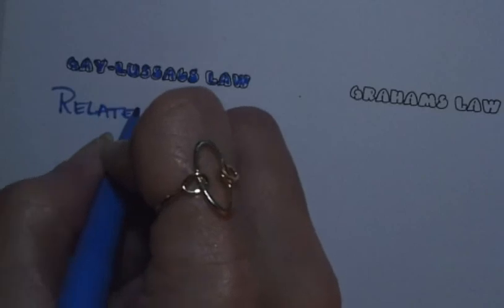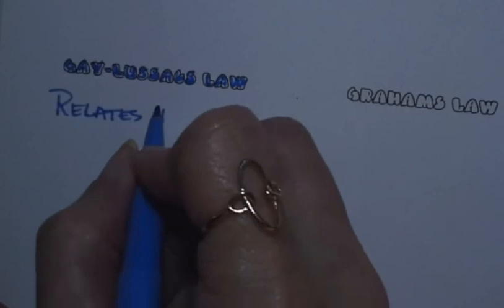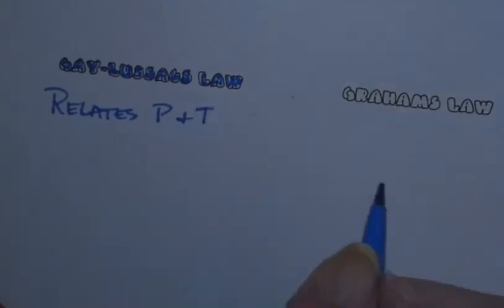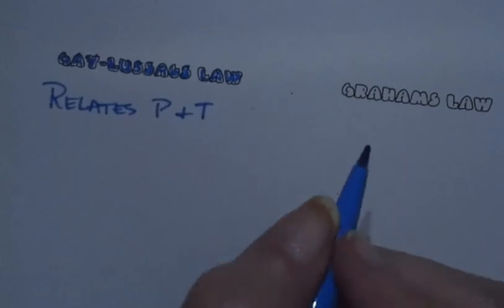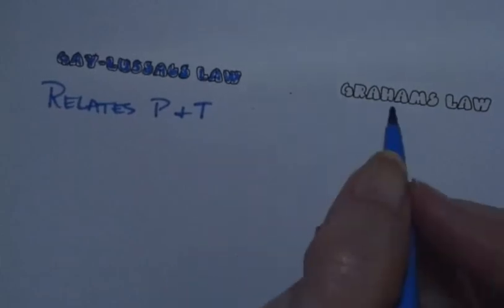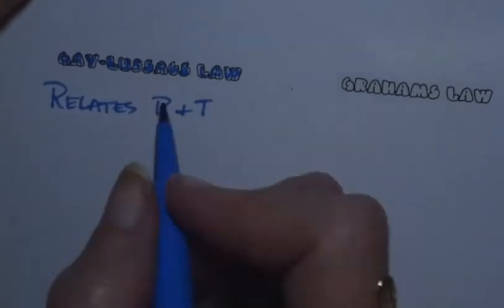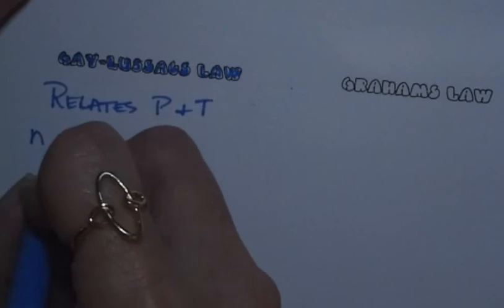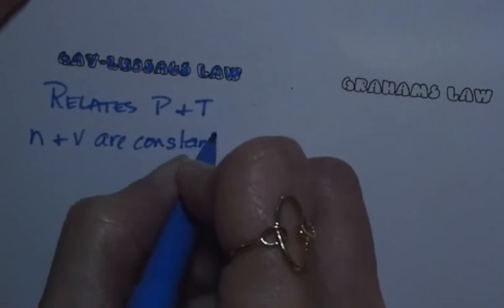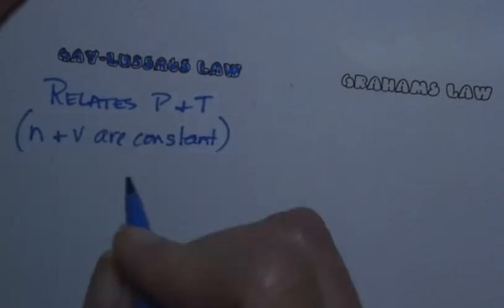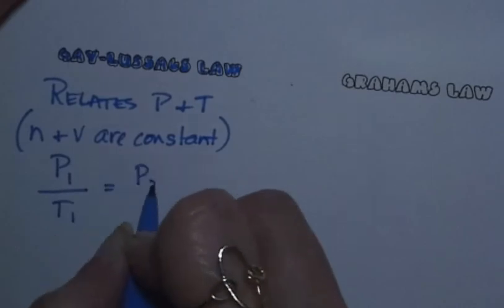You don't necessarily need to memorize that Gay-Lussac's law is pressure and temperature, but they'll bring it up and refer to it that way, so you don't need to be freaked out when you see it. In this case, number of moles and volume are constant, and the equation looks like P1 over T1 equals P2 over T2.